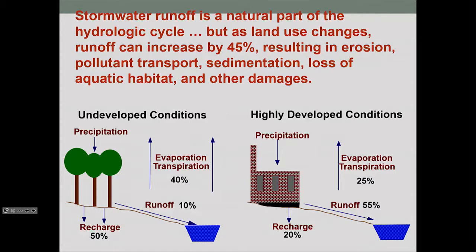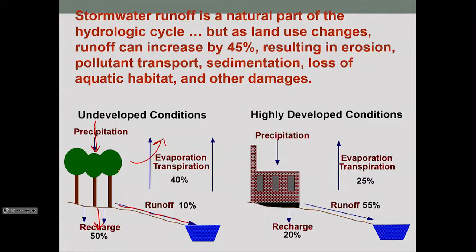With hydrology, we have precipitation — rain that comes down — and some of that rain will filter into the ground, some of it will evaporate, and some fraction of it will accumulate and run across the surface and end up in rivers and streams.